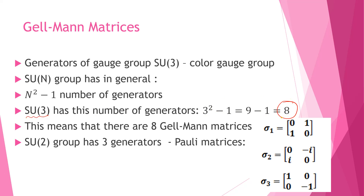In the literature, you'll find that Gell-Mann matrices are actually the generators of SU(3) group. Since Gell-Mann matrices are generators of SU(3) group, this means that there are 8 Gell-Mann matrices.